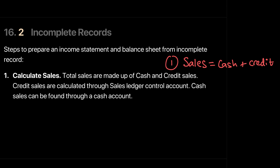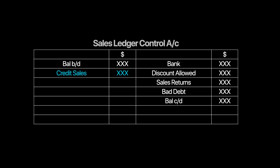For cash sales we draw a simple cash account, and for credit sales we draw the sales ledger control account. Let's recap the sales ledger control account — we use it to calculate our credit sales. Opening trade receivables come on the debit side. Trade receivables increase from the debit side and decrease from the credit side. The closing trade receivables are also entered. The missing figure we are looking for is credit sales.